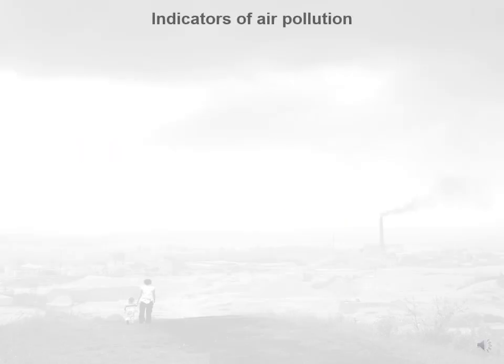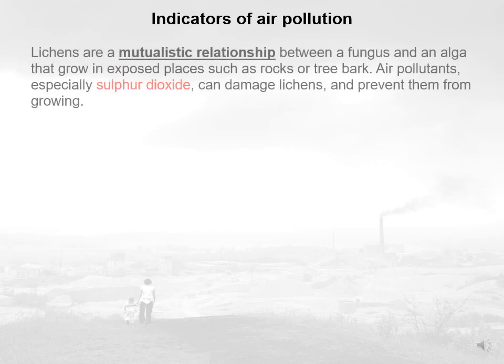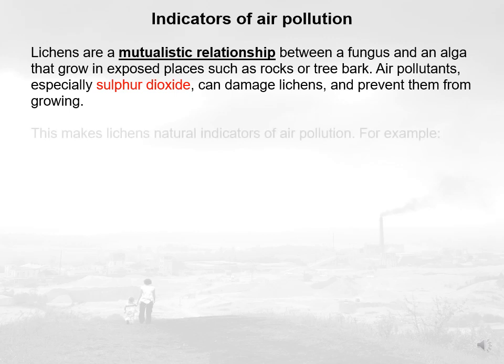Let's talk about indicators of air pollution. There are organisms such as lichens. Lichens are a mutualistic relationship between a fungus and an alga, so they grow together and help each other to live. They grow in exposed places such as rock or tree bark. Air pollutants, especially sulfur dioxide, can damage lichens and prevent them from growing.